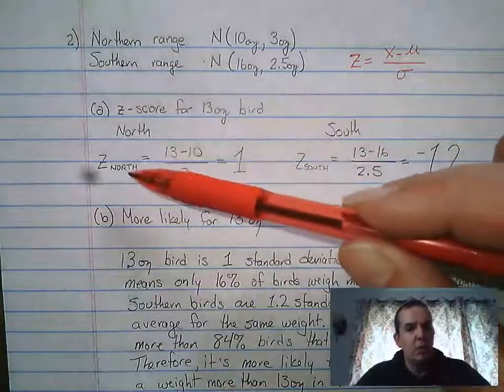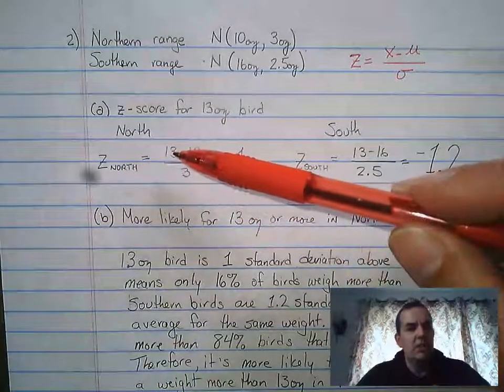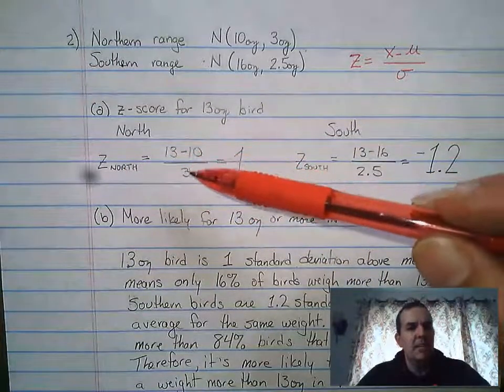So to figure it out for north, and this is a good way to represent it, z-north equals 13, which is the weight of the bird, minus 10 divided by 3, which gives us a z-score of 1.